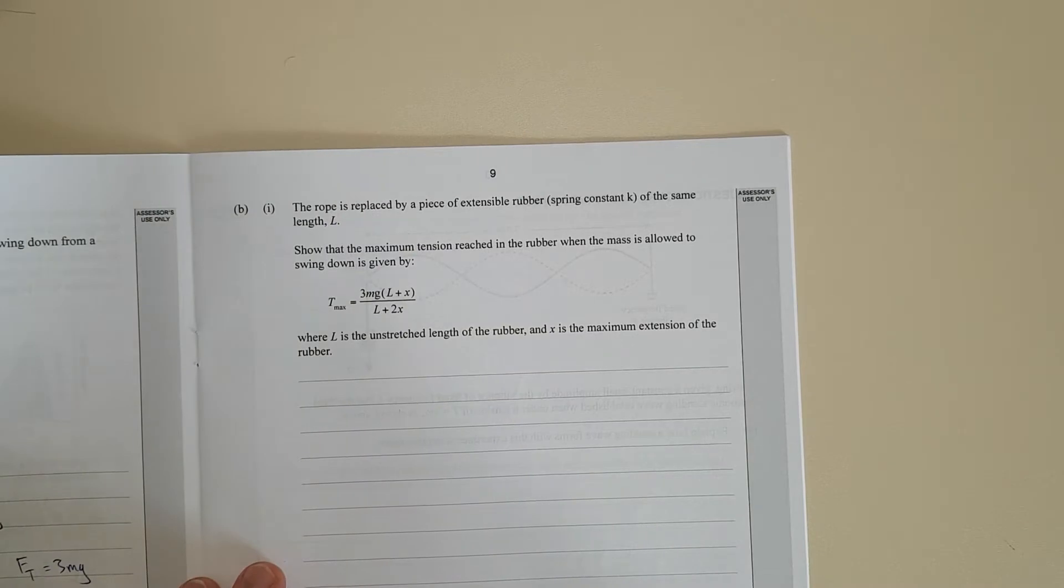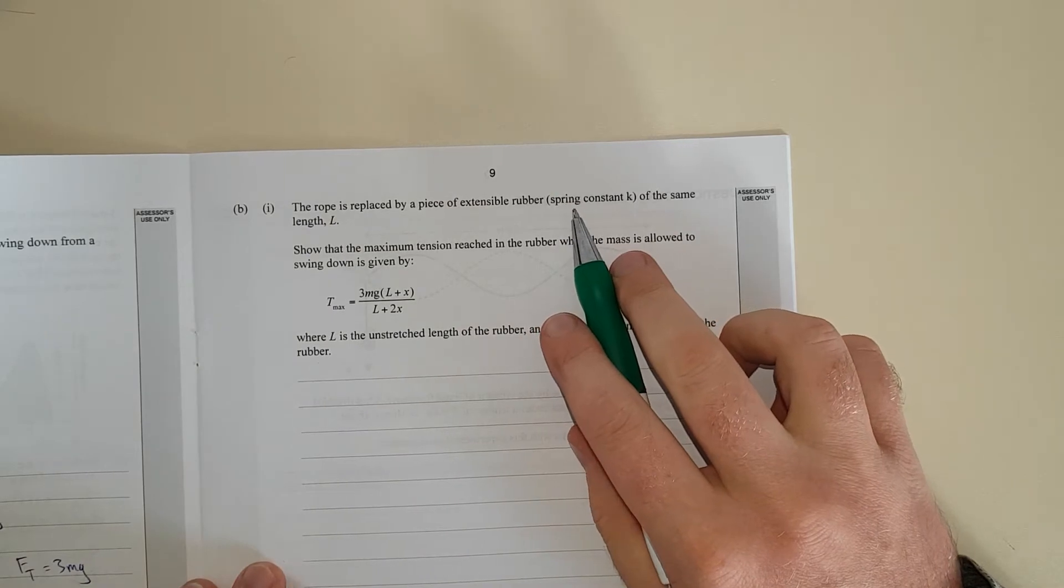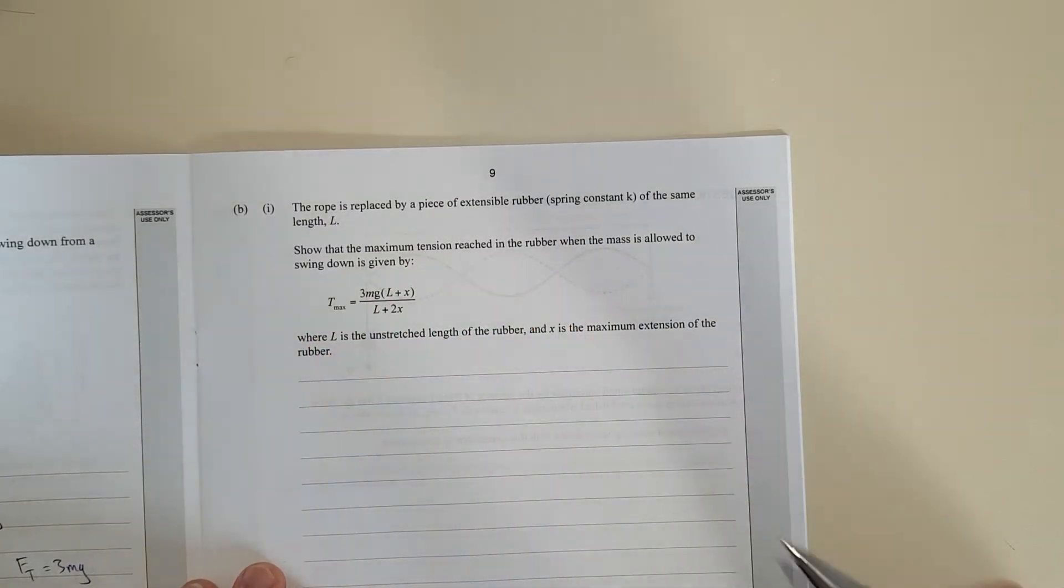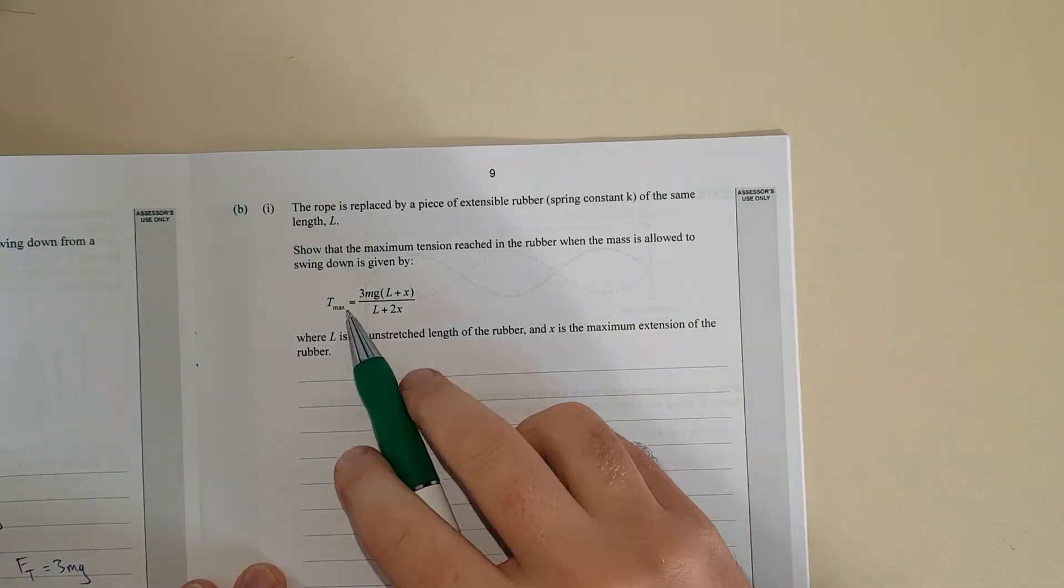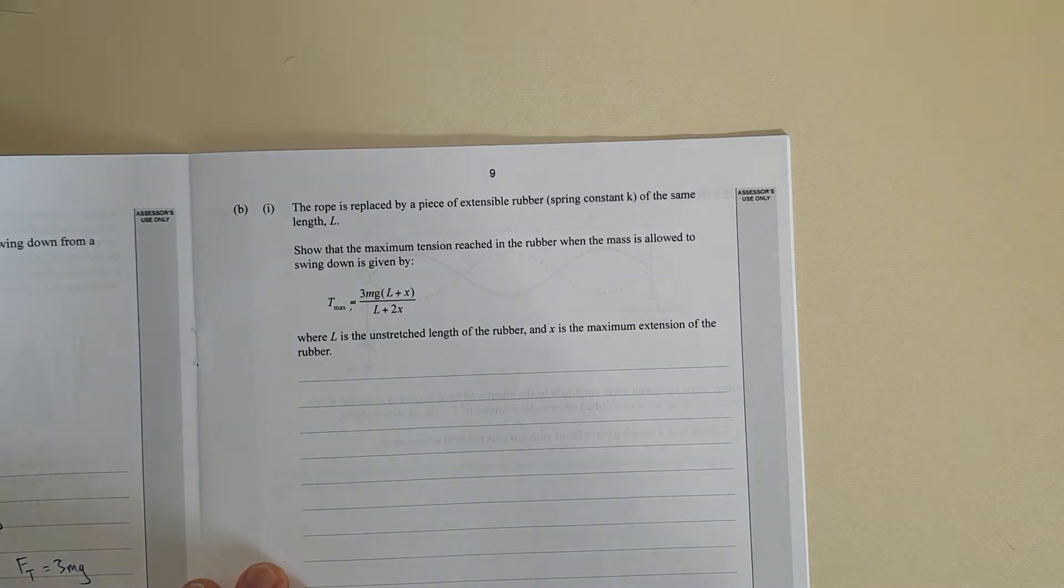Next question. The rope is replaced by a piece of extensible stretchy rubber spring constant K of the same length L. Show the maximum tension reached in the rubber when the mass is allowed to swing down is given by this formula, where L is the unstretched length of rubber and X is the maximum extension of the rubber.